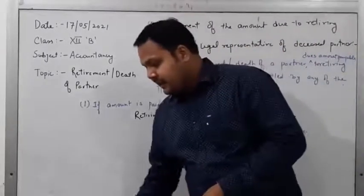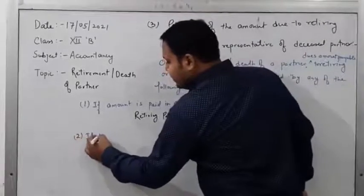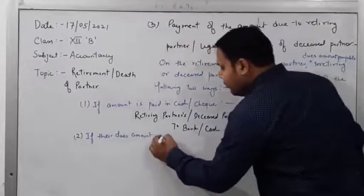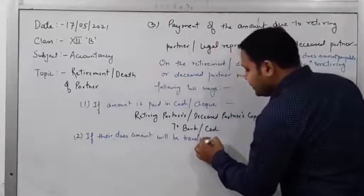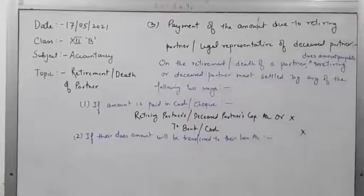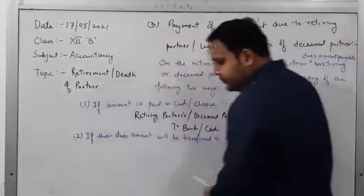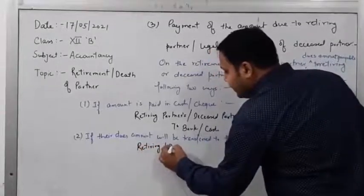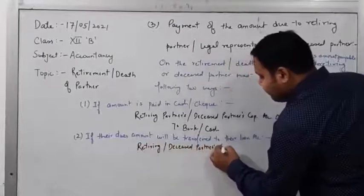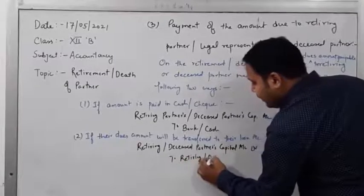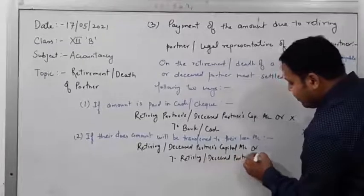The second way is if their dues amount will be transferred to their loan account. In this situation it will be shown as a loan account. The journal entry will be: Retiring or deceased partner's capital account debit to retiring or deceased partner's loan account.